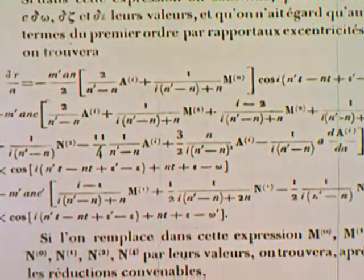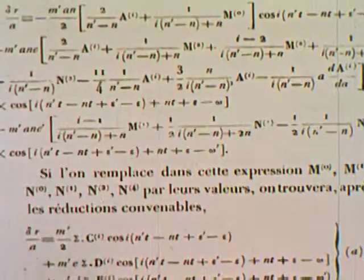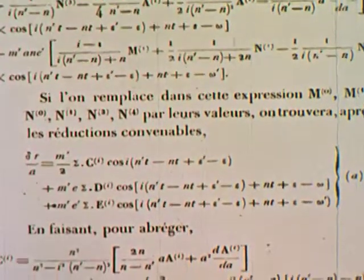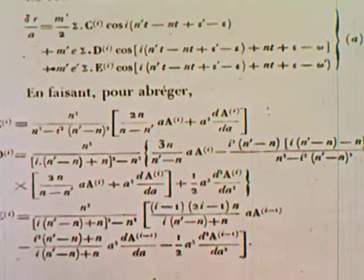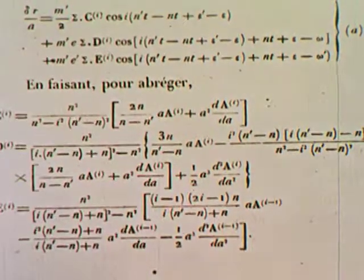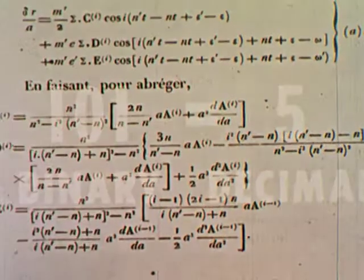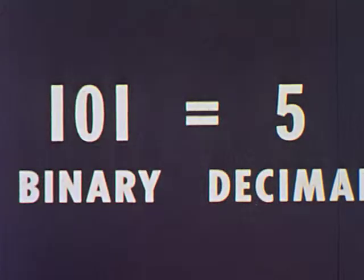Since this is true, how can we translate reams of data, thousands of words, complicated formulas into the yes-no signals that the computer can understand? The answer is binary arithmetic, a system that uses only two digits, one and zero.